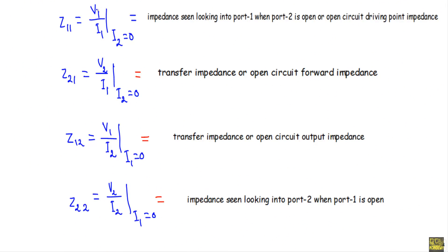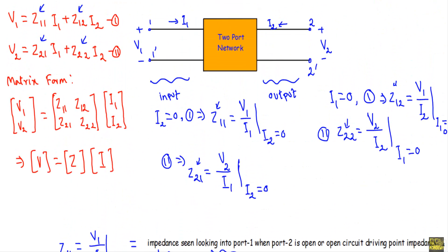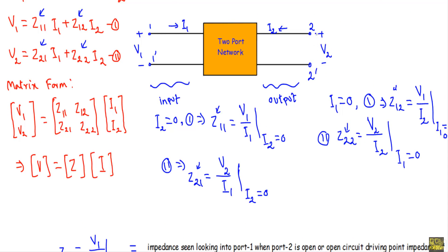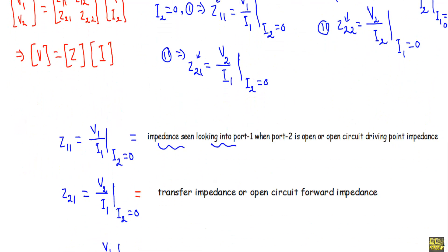Z11 is the ratio of V1 to I1 when I2 equals zero. It is the impedance seen looking into port 1 when port 2 is open — also called the open circuit driving point impedance. This means if I keep port 2 open or replace it with an open circuit, Z11 is the impedance seen looking into port 1.